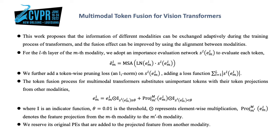For each layer of each modality, we adopt an importance evaluation network to evaluate each token. We further add a token-wise perennial loss on the outputs of the evaluation network to find uninformative tokens. The token fusion process for multimodal transformers substitutes uninformative tokens with their token projections from other modalities. We reserve its original positional embeddings that are added to the projected feature from another modality.